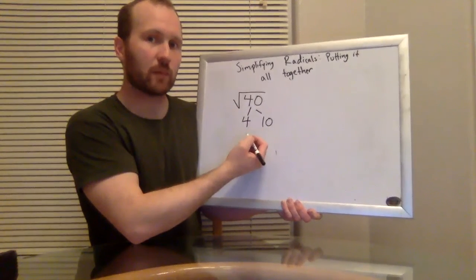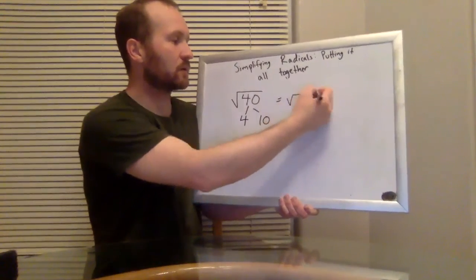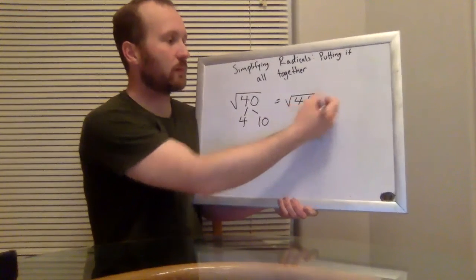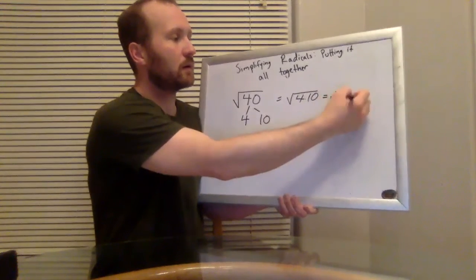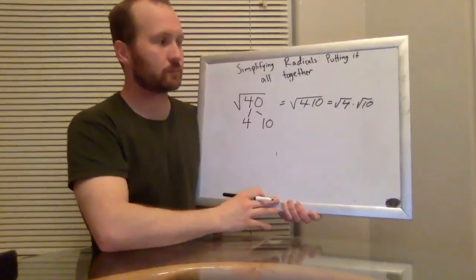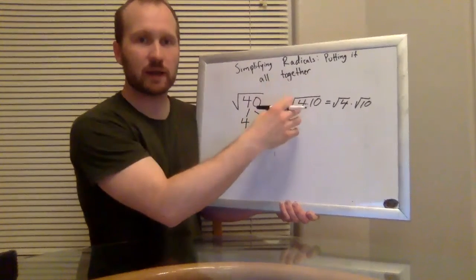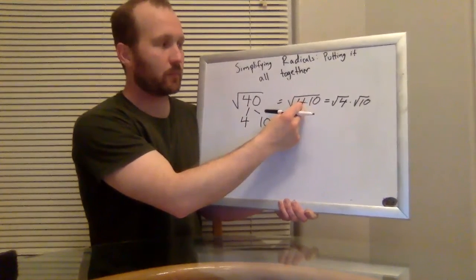And now we have to kind of remember how square roots work. The way square roots work is the square root, if I have the square root of four times 10, which is my 40, I can rewrite that as the square root of four, times the square root of 10. Square roots can distribute or split up over multiplication.